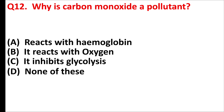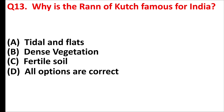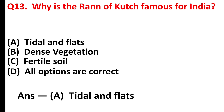Why is carbon monoxide a pollutant? Answer is option A: it reacts with hemoglobin. Why is the Rann of Kutch famous in India? Answer is option A: tidal mudflats.